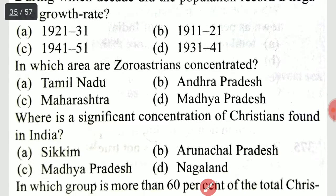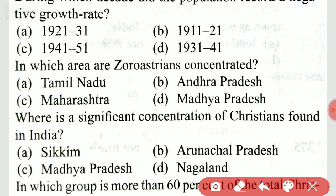In which area are Zoroastrians concentrated? That is Maharashtra. Zoroastrians are concentrated in Maharashtra.